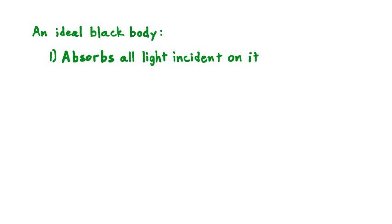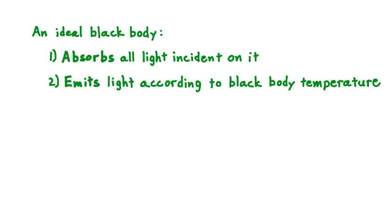First off, an ideal blackbody absorbs all light that's incident on it. No matter the wavelength of light or its angle of incidence, a perfect blackbody will absorb it all. And second, an ideal blackbody also emits light, and this emission has to do with only one factor: the blackbody's temperature. So an ideal blackbody absorbs all electromagnetic radiation incident on it, and it also emits radiation where that emission depends only on the temperature of the blackbody.